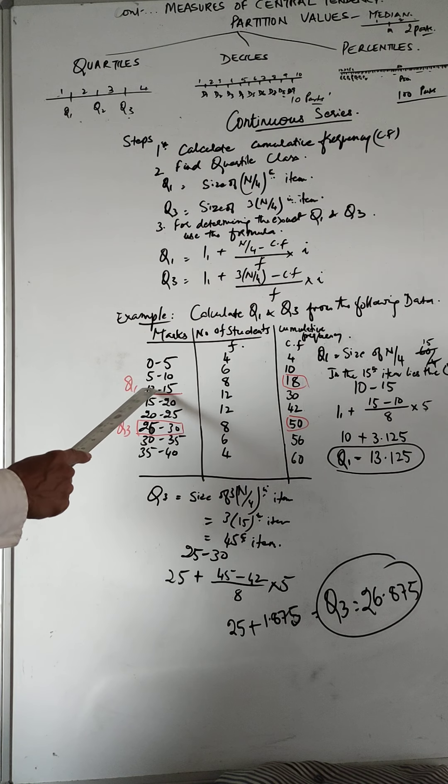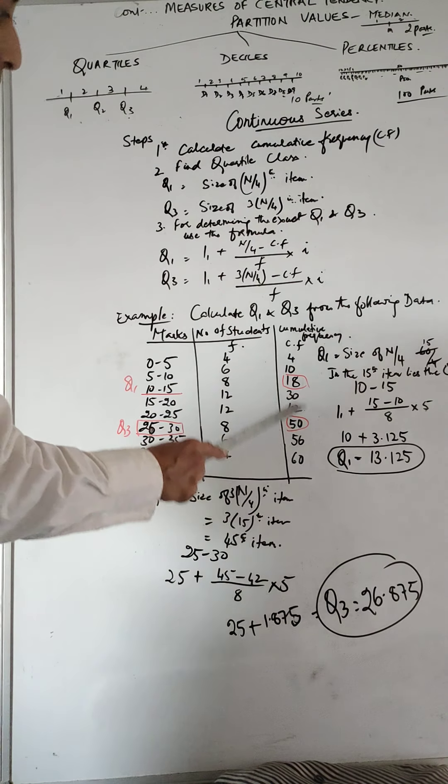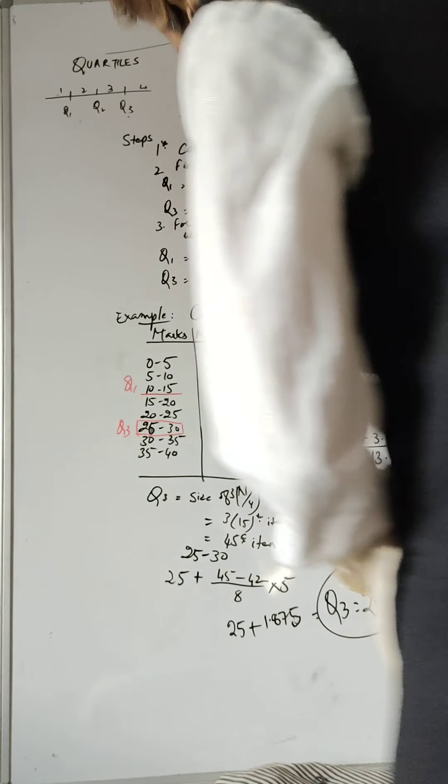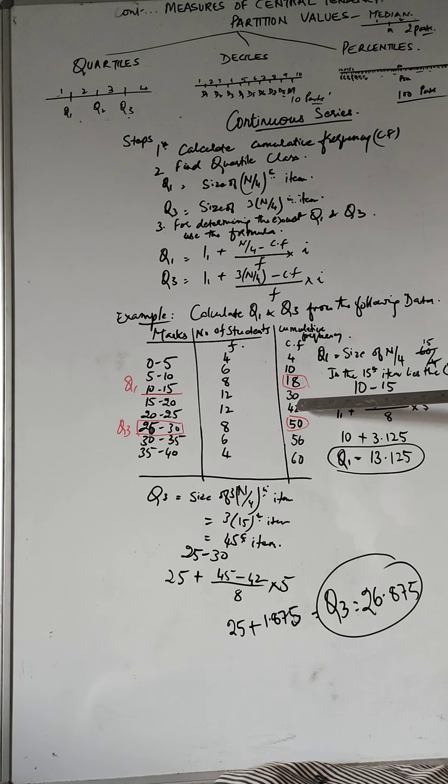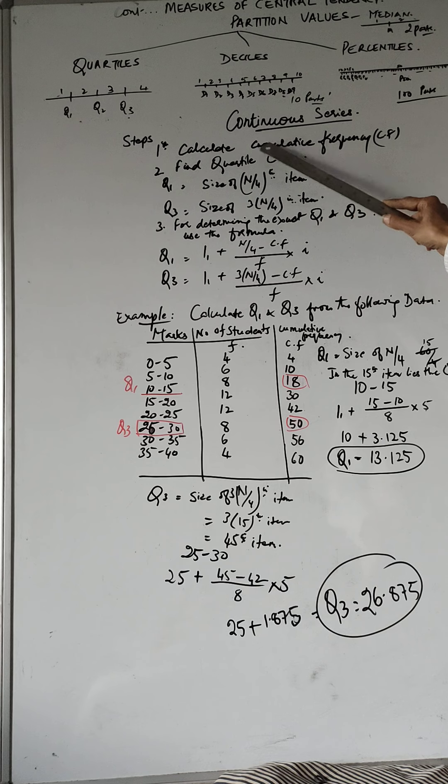8 students got marks within 10 to 15. Now what we want to find out is the quartile class. So the first step is calculate cumulative frequency. So this is how we are going to do the cumulative frequency. Now look at this. So 4, 6 and 4 is 10, then 10 and 8 is 18. So marks less than 20, how many got? 30, 42 plus 8 and so on. So this is how we calculate the cumulative frequency and the total number of students in this particular class is 60. So once we found out the cumulative frequency,